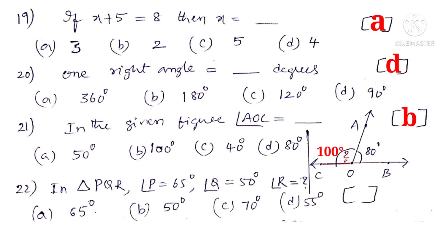Now 22. In triangle PQR angle P is equal to 65 degrees. Angle Q is equal to 50 degrees. Angle R is equal to how much? We know that sum of the angles in a triangle is 180 degrees. So angle R is equal to 180 degrees minus of sum of 65 plus 50. So 180 degrees minus 115 degrees which is equal to 65 degrees. So the correct choice is A.